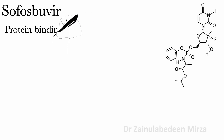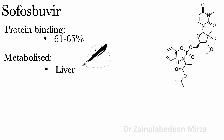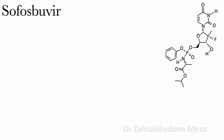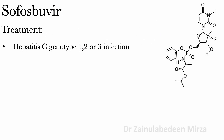Protein binding of Sofosbuvir is about 61 to 65 percent. Sofosbuvir is extensively metabolized in the liver. Sofosbuvir is used to treat hepatitis C genotype 1, 2, or 3 infections with ribavirin or peginterferon.